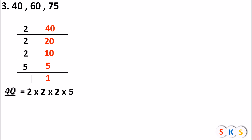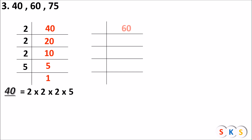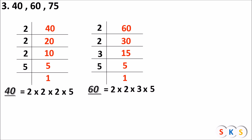Now find prime factors of the next number, which is 60. 60 is divisible by 2 — always divide by prime numbers. 60 ÷ 2 = 30, 30 ÷ 2 = 15, 15 ÷ 3 = 5, 5 ÷ 5 = 1. So the prime factor of 60 is 2 × 2 × 3 × 5.